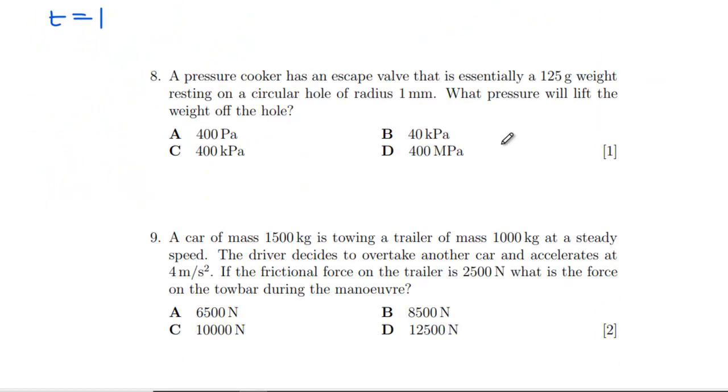Question eight: a pressure cooker has an escape valve that is essentially a 125 gram weight resting on a circular hole of 1 millimeter. What pressure will lift the weight off the hole? Pressure is force over area, so the force has to be the same as the weight, so 0.125g in kilograms. If we put this into meters, we need to have π r squared, so π times 0.001 squared.